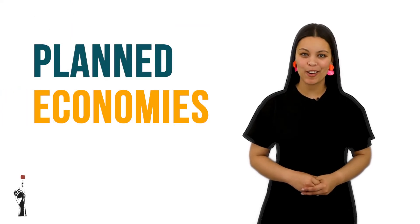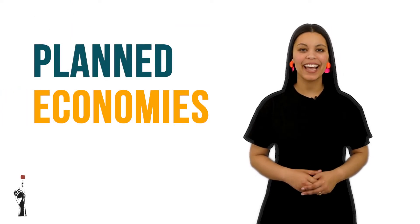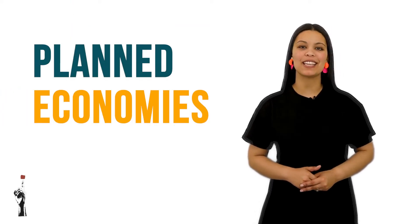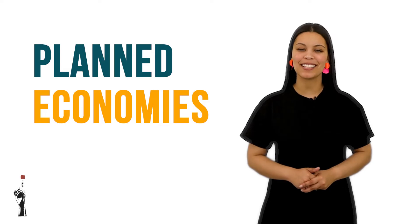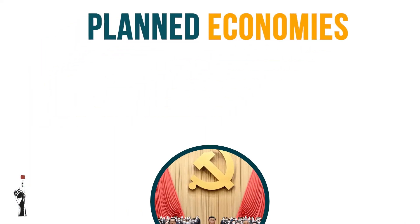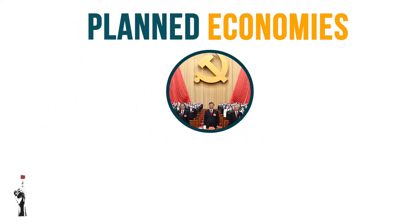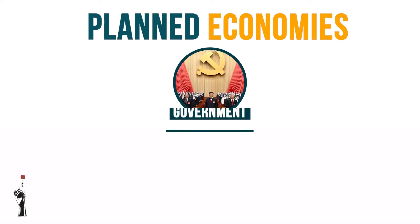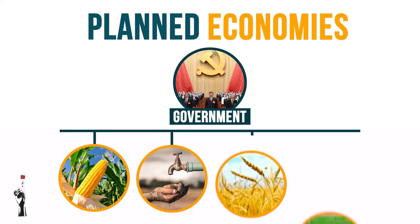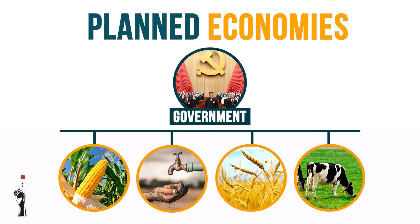In the previous lesson we had a look at planned economies. Let's revise what this economy is about. A planned economy is an economic system in which the government makes all the decisions about the production and consumption of goods and services in the country.